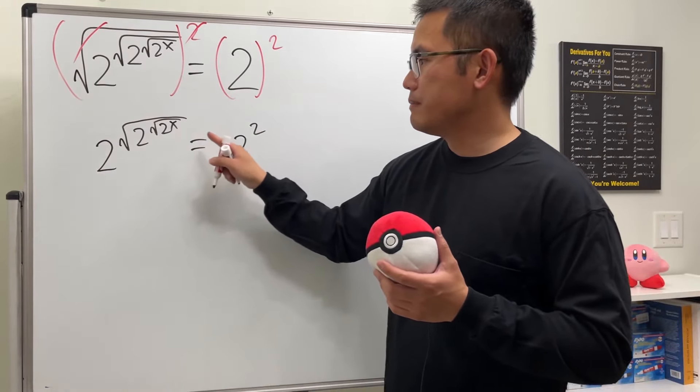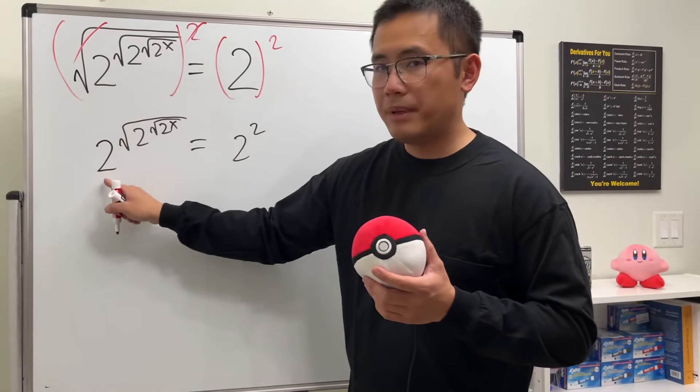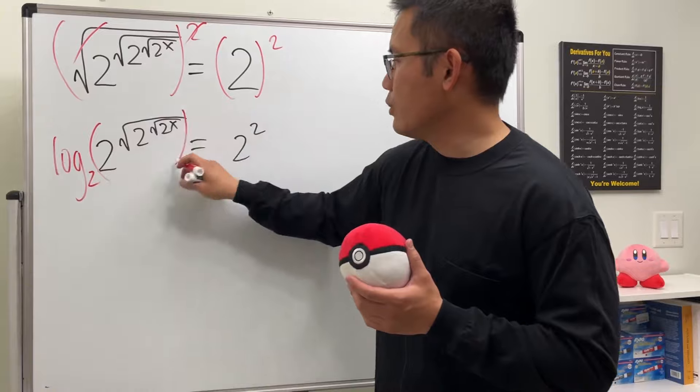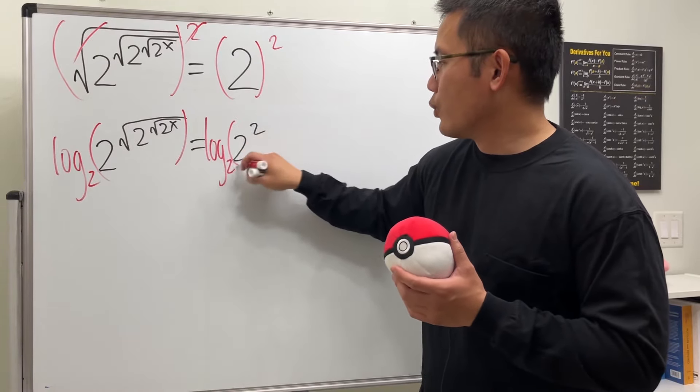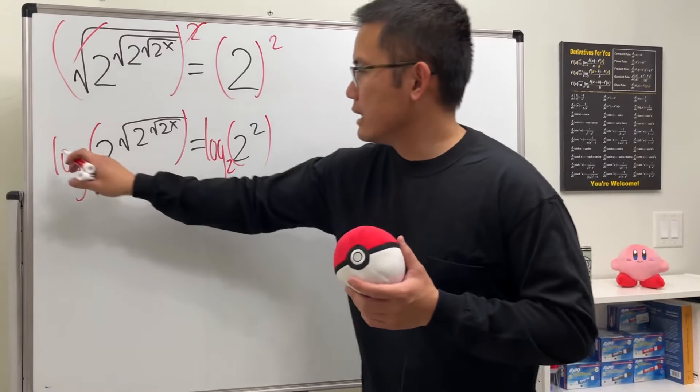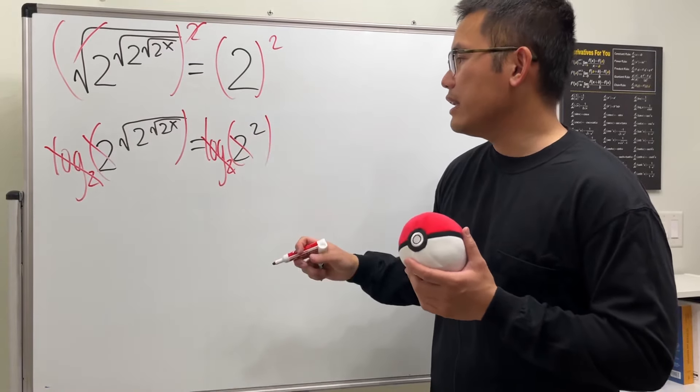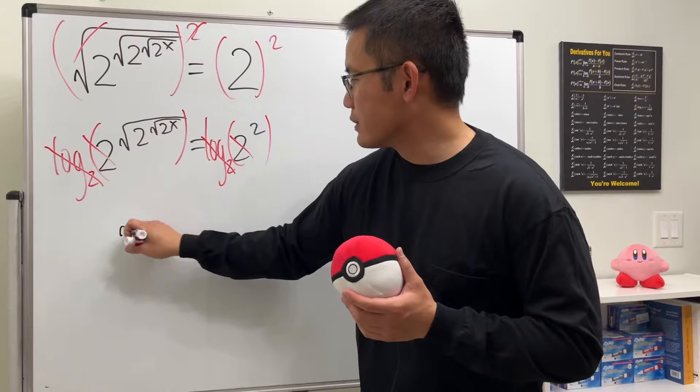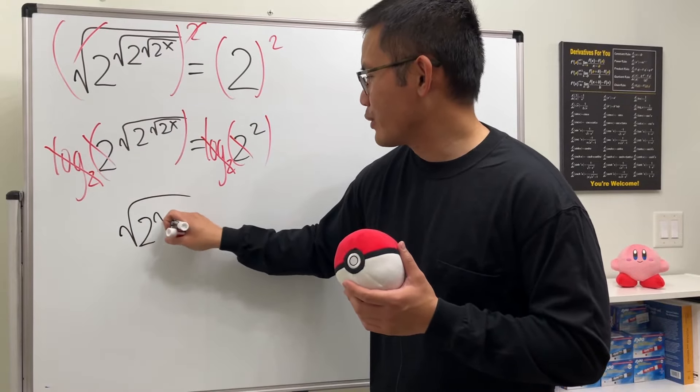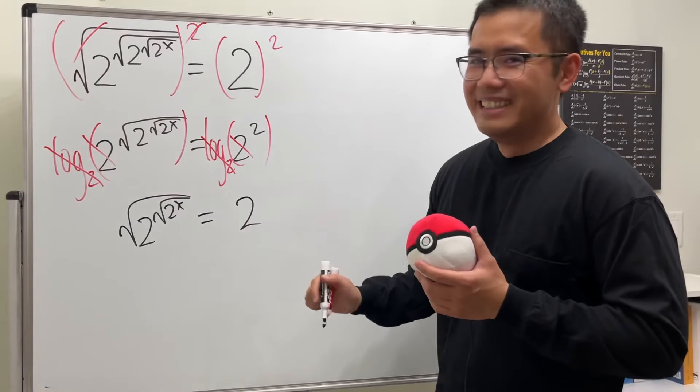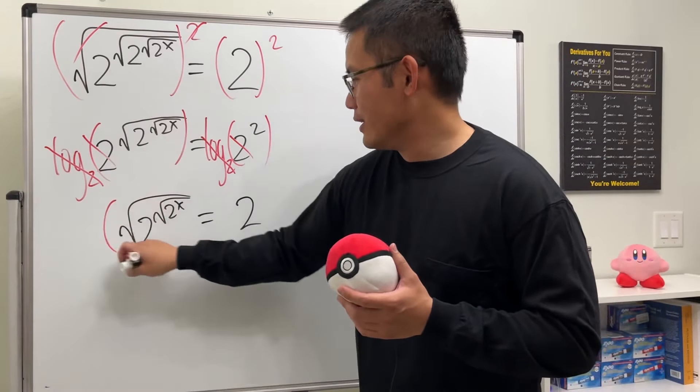But because the base right here is 2, let's do log base 2 like so. And here's the thing when we do log base 2 on both sides, this and that cancel and we can actually cancel this and that together as well. So in fact we have square root of 2 to the square root of 2 to the x and that's equal to 2.